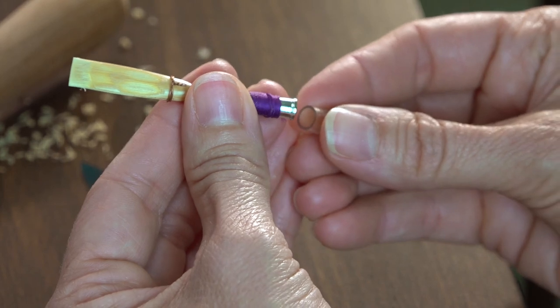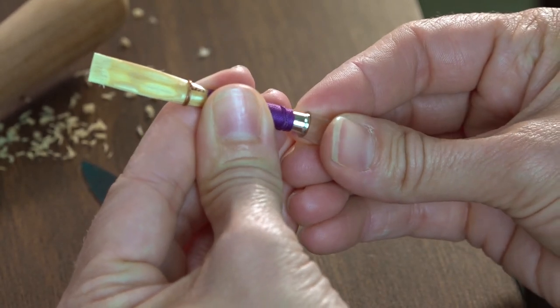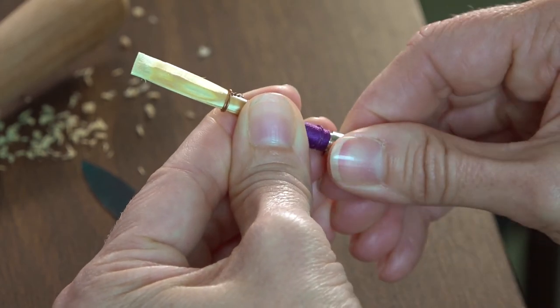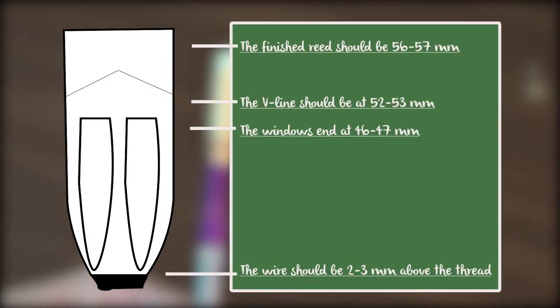If you have used a staple without a collar, you'll probably want to put a short piece of surgical tubing over the end of the staple to help it stay on the bocal. Your finished reed should crow between a C and a C sharp, be about 56 to 57 millimeters long, and should vibrate freely.